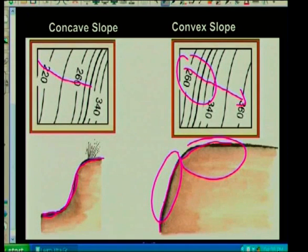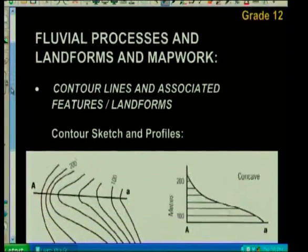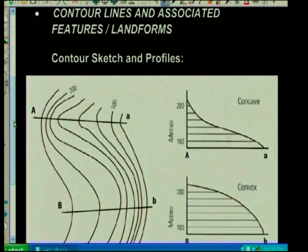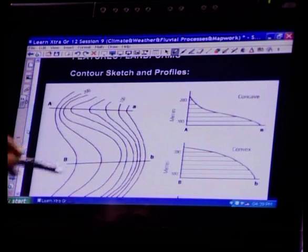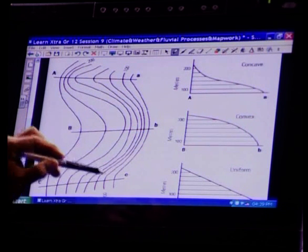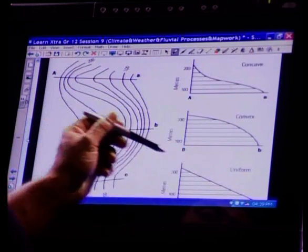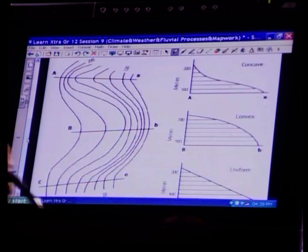Another diagram shows two slopes from A to B giving a longitudinal profile. Here it's steep to gentle — concave. Here it's gentle to steep — convex. This is how you'll see it on a map. And where the lines are all equal distance apart, looking at the longitudinal profile it's actually uniform — a nice straight slope. This is in your topographic maps where you'll have to identify these.